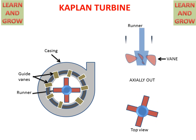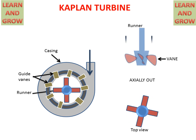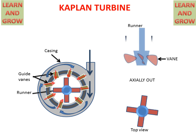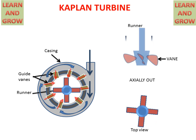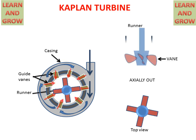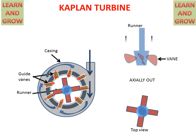Now we see in this figure how it works. Water will come into the casing and rotate within it. By this rotation, it will enter through the guide vanes, which guide the water to rotate the runner. The water falls axially on the runner, and then the runner starts rotating.